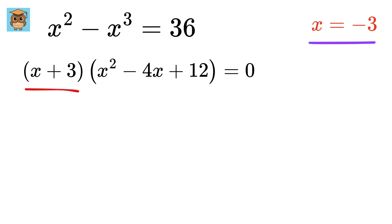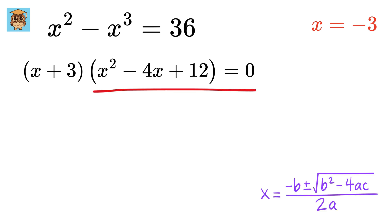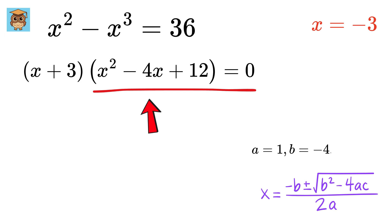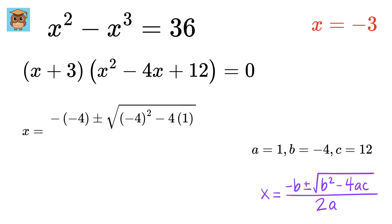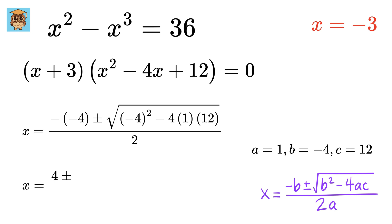This gives x equals minus 3 from the first factor. For the quadratic part, we use the quadratic formula with a equals 1, b equals minus 4, and c equals 12. Plugging in gives x equals minus of minus 4 plus or minus the square root of minus 4 squared minus 4 times 1 times 12, all over 2. This simplifies to 4 plus or minus the square root of 16 minus 48, which is the square root of minus 32, all over 2.